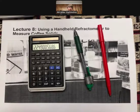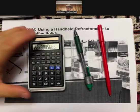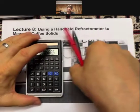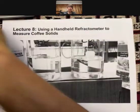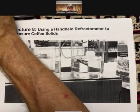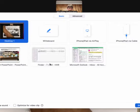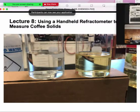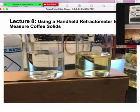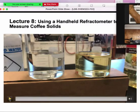This is going to be lecture eight, using a handheld refractometer to measure coffee solids. This video starts with, or this lecture outline starts with a video. I'm going to share my screen here and show the video, and what you want to do on your first page is describe what happens in the video and why.